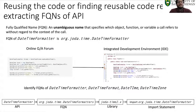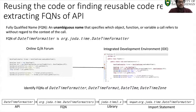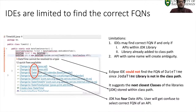After pasting online code segments, we need to identify the fully qualified name of the different APIs involved. The workflow is: from the APIs, we find the fully qualified name, and from the fully qualified name, we get the library and the import statement. However, IDEs may find the correct fully qualified name only if the API is within the JDK library or the library is already added to the class path.